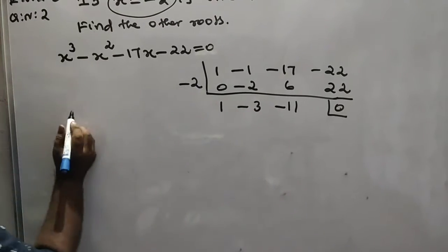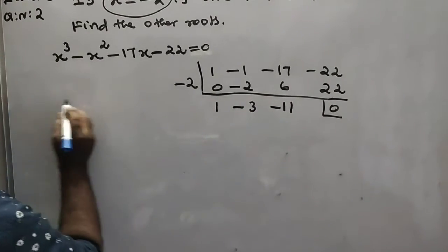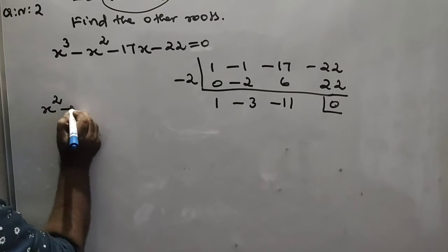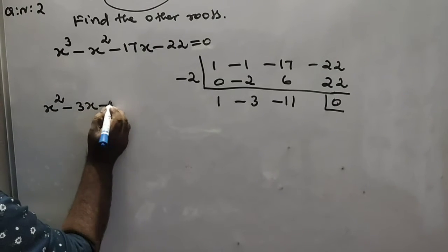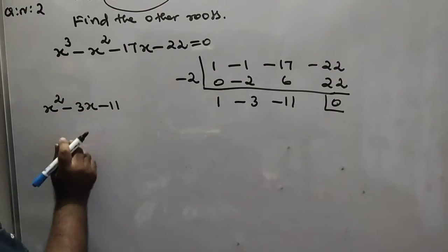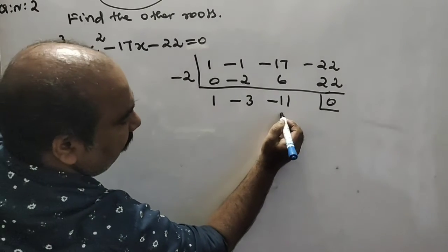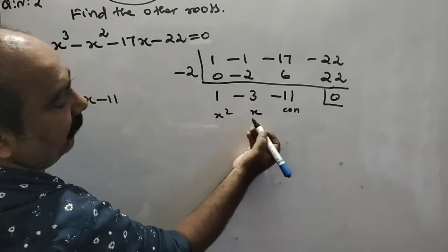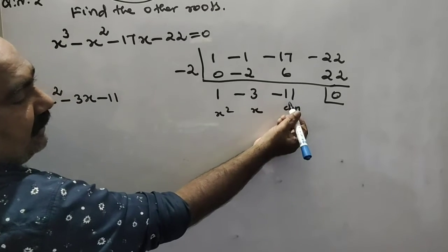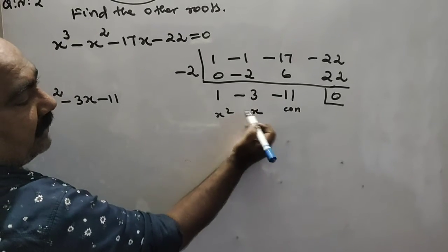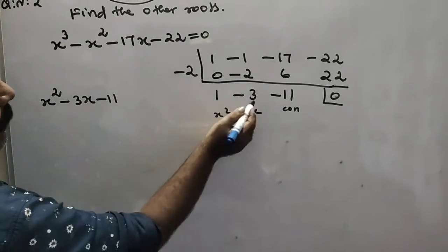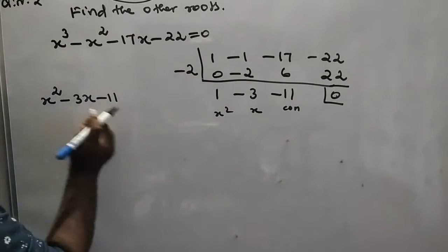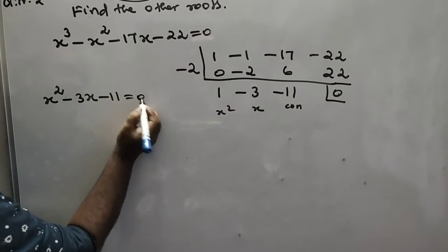Since the remainder is 0, x equals minus 2 is confirmed as a root. The other factor gives us the quotient: x squared minus 3x minus 11. This quadratic gives us the other roots.